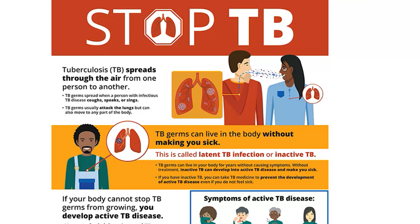Other high-risk factors include being in close contact with someone who has TB — similar to COVID-19, we have index cases, the primary TB patient, and contact cases, those who live near or spend time with that person. Additionally, people living with HIV or in any immunocompromised state have lower defenses and are more prone to getting TB and other diseases.